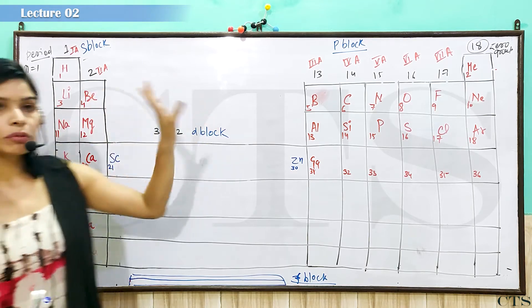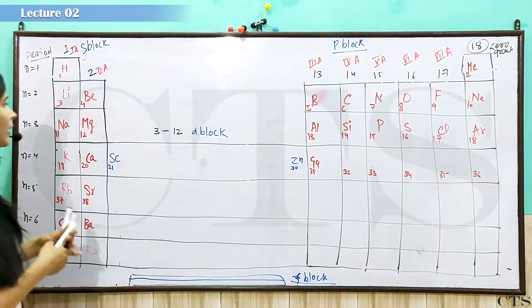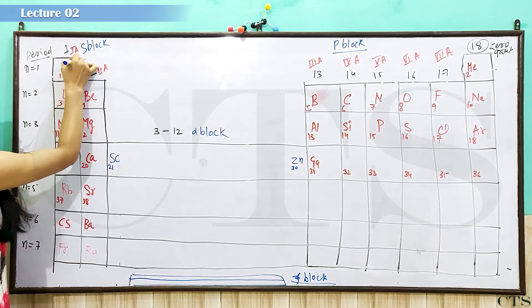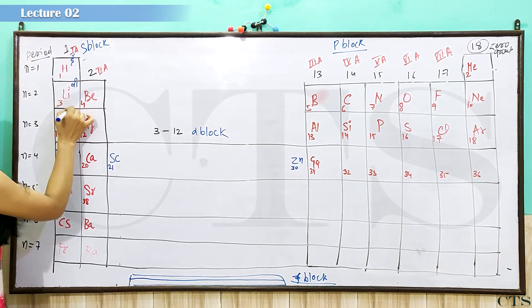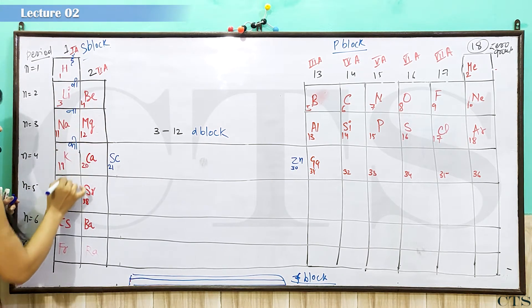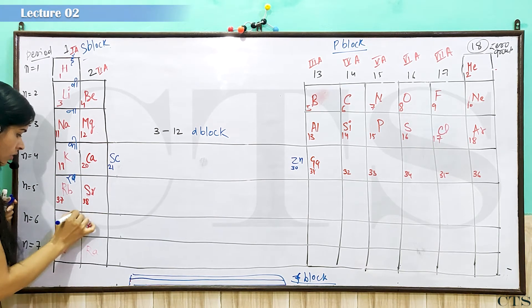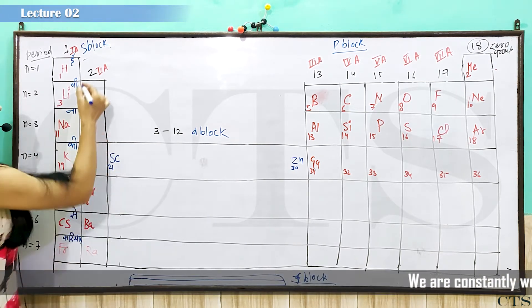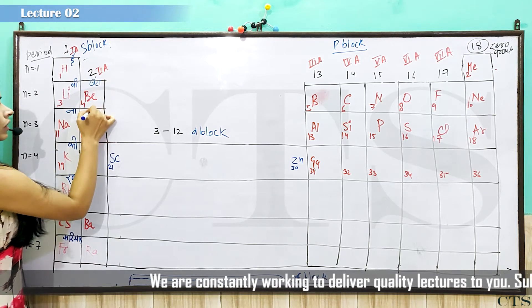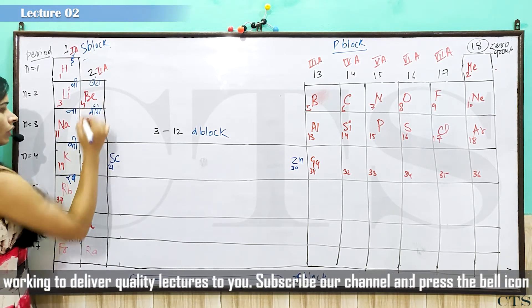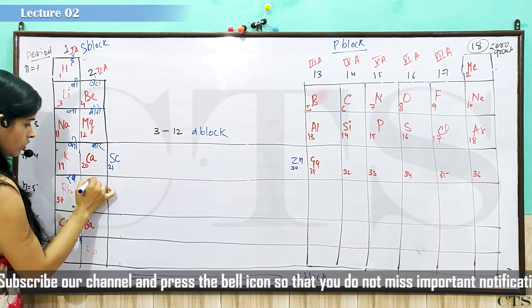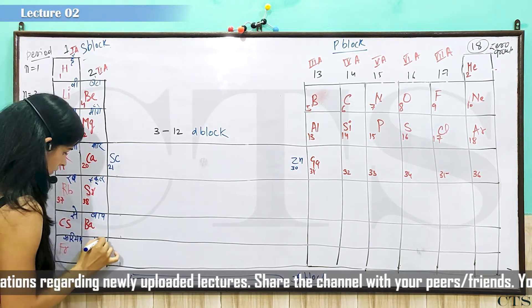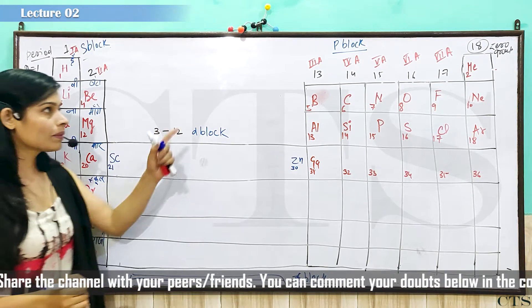Aap sabse pahle mene s block aur p block aapko yad karathe ho. Beta, yahaan par aap kya likh saktay ho, code me, memonics likh raha yun beta. Hai, li, na, ki, rab, se, fariyad. Iski memonics ho ghi beta ji. Beta maange car, scooter, baap razi.